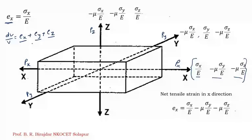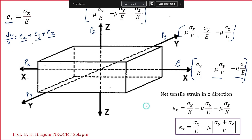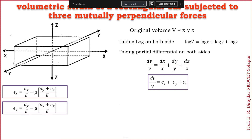The net tensile strain in x direction equals sigma x upon E minus mu sigma y upon E minus mu sigma z upon E. Taking mu as common: eX equals sigma x upon E minus mu times (sigma y plus sigma z) upon E. This is the net tensile strain in x direction.